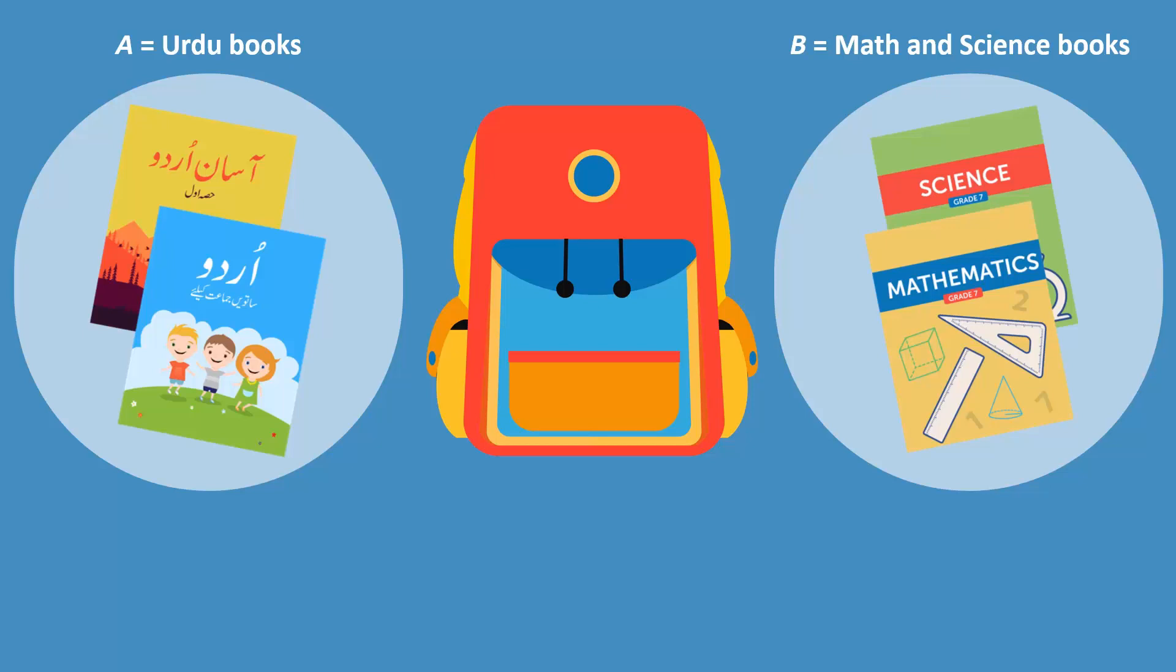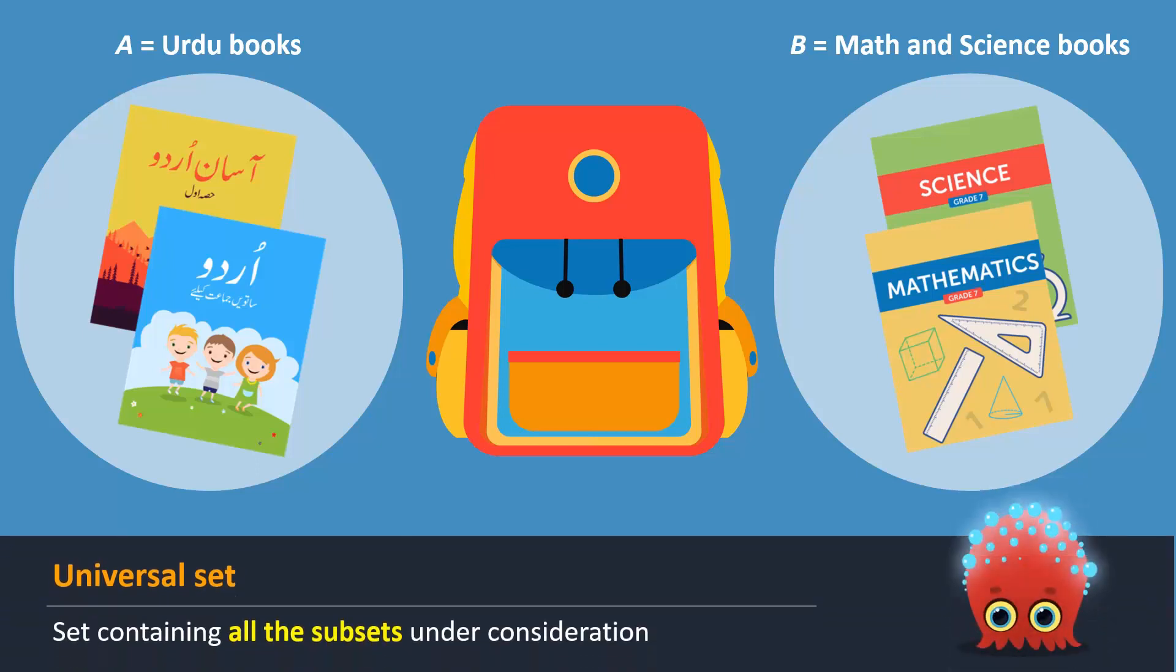In mathematics, the school bag can be called a universal set. A universal set is a set that contains all the subsets under consideration in a particular case. It is denoted by the capital letter U.